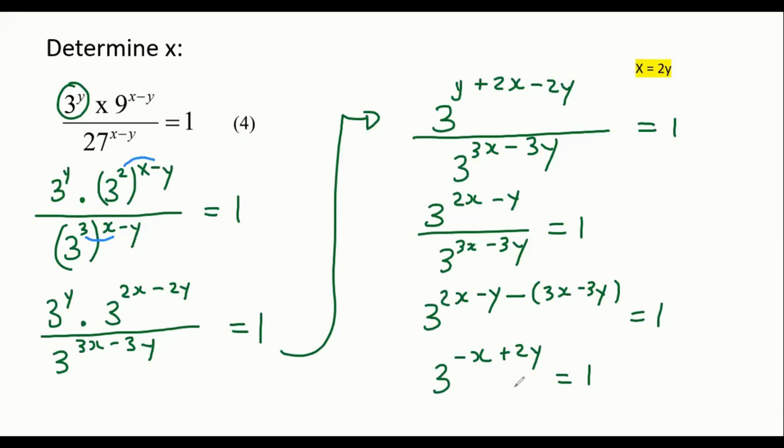Now, ideally, we would want these two numbers to be exactly the same, because then we can cancel the base. So remember that the number 1 can be rewritten as 3 to the power of 0, because that is also equal to 1. So we can do this.